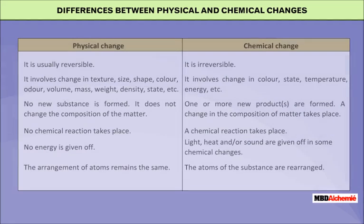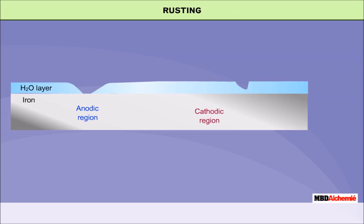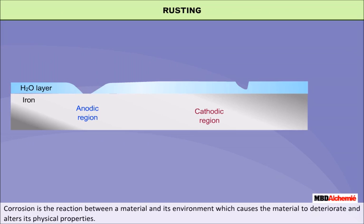Let us study the difference between physical and chemical changes. Rusting is actually corrosion. Corrosion is the reaction between a material and its environment, which causes the material to deteriorate and alters its physical properties.